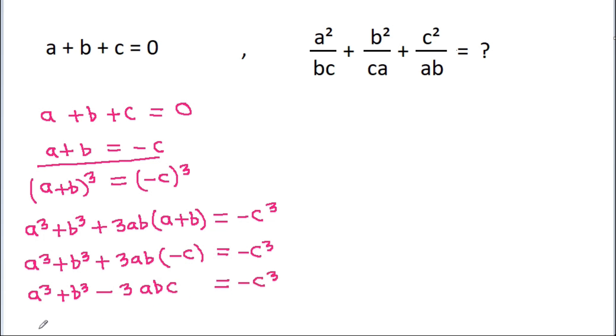So A cubed plus B cubed plus C cubed will be equal to 3ABC.